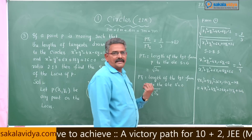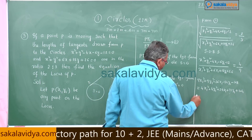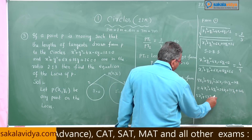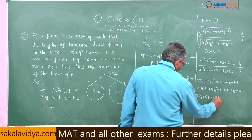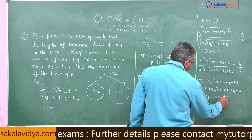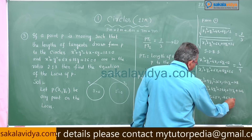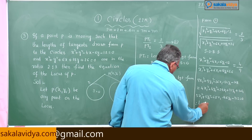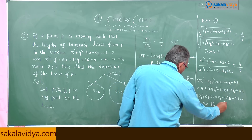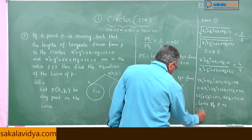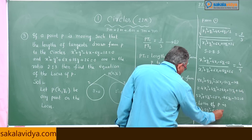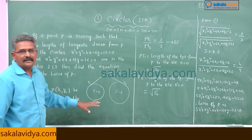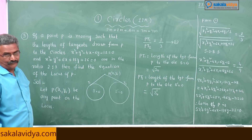Bringing all terms to one side: 9x₁² - 4x₁² = 5x₁², 9y₁² - 4y₁² = 5y₁², and collecting x₁, y₁, and constant terms gives 5x₁² + 5y₁² - 60x₁ - 126y₁ - 212 = 0. Therefore, the locus of P is 5x² + 5y² - 60x - 126y - 212 = 0. This is the final answer. Once again check the steps one by one at your own time.